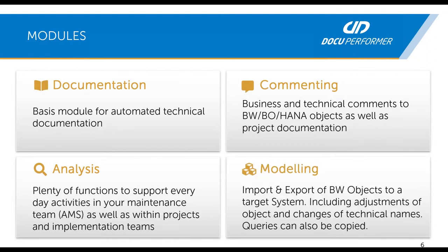The last module is the modeling module. This module supports you during migration projects — for example, if you would like to migrate to BW4HANA. You have the possibility to add the old entities of your old system, import those entities to the Doku Performer, adjust the settings, change the namespace, rename them, and also transfer old entities like DSOs or InfoCubes to RDSOs. Afterwards you can export them back to your new BW4HANA system.